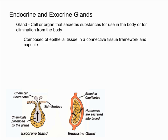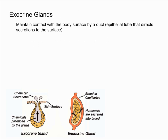Now that we know what glands are, and I've shown you a picture below of the two different types of glands, let's start off by talking about exocrine glands. Exocrine glands maintain contact with the body's surface by a duct, which is an epithelial tube that directs the secretions to the surface. As you can see, the chemicals produced by the exocrine gland are allowed to get to the surface — and it doesn't always have to be the skin surface. Some examples of exocrine glands are your tear glands, sweat glands, and mammary glands. The key thing to remember is that exocrine glands maintain contact with the body's surface by a duct — that's the key word.